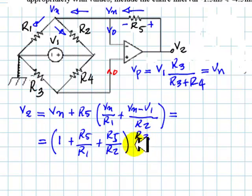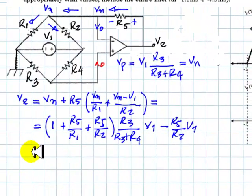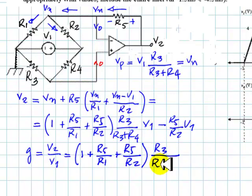So let me write it as R3 times R3 plus R4, a voltage divider, and here is V1, and negative minus R5 over R2, V1. So we can factor out V1, move it to the other side, and say that G defined as V2 over V1, the voltage gain is just all of this expression. These resistors. Minus R5 over R2. That is the answer to part A.